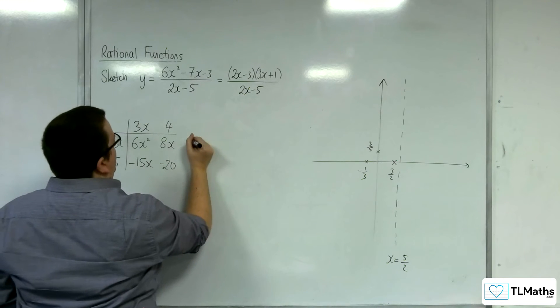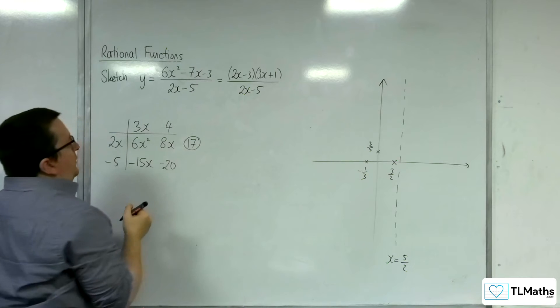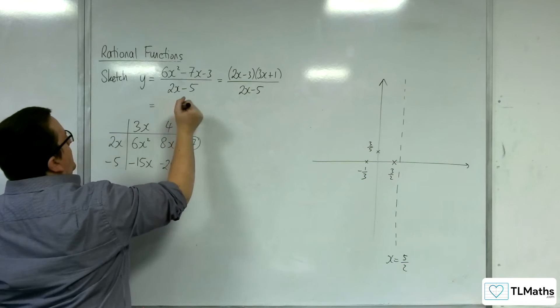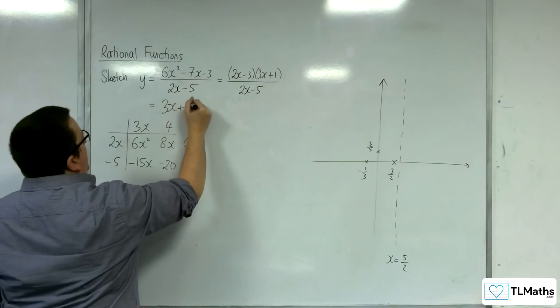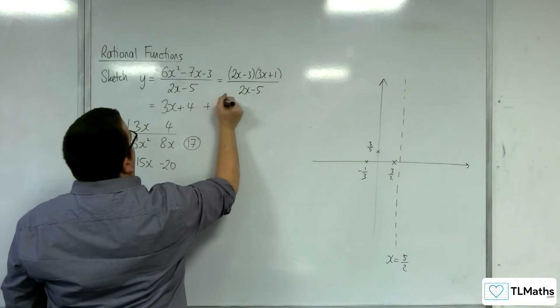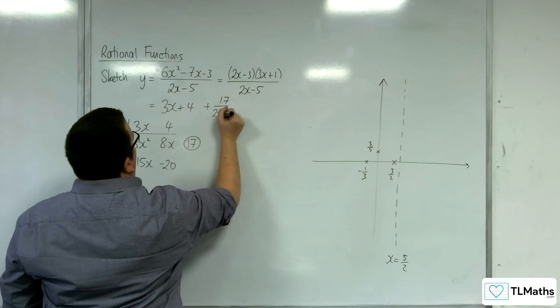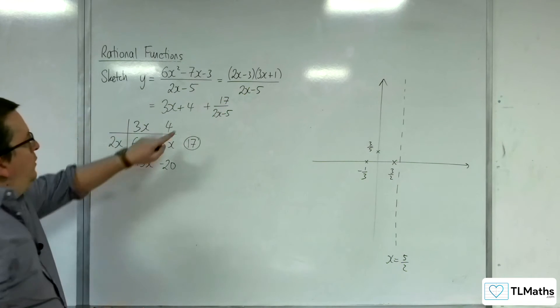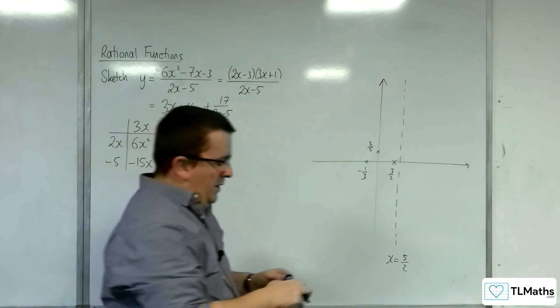We want -3, so we add 17. So 17 is the remainder. We have 3x + 4 + 17/(2x - 5). So y = 3x + 4 is the oblique asymptote.